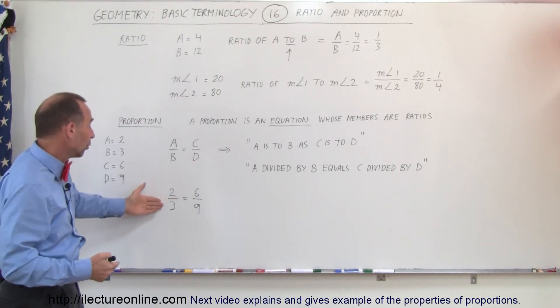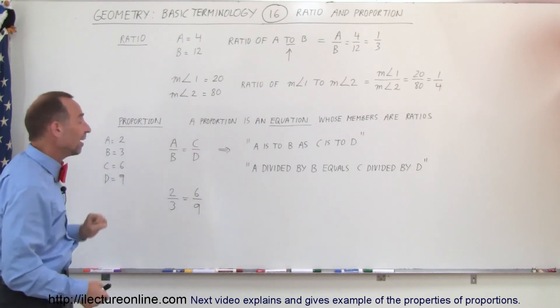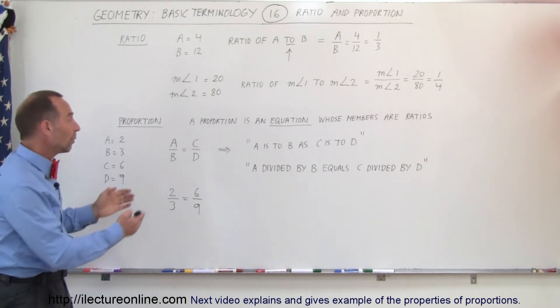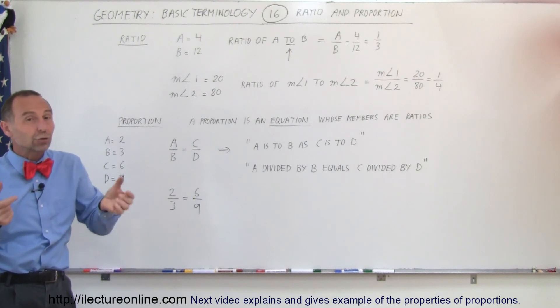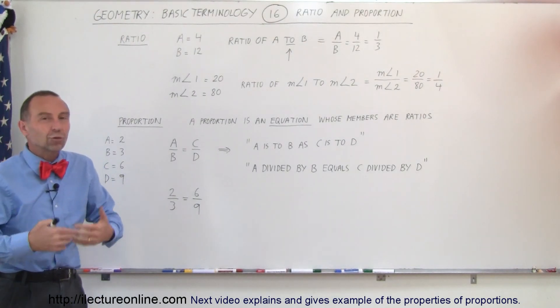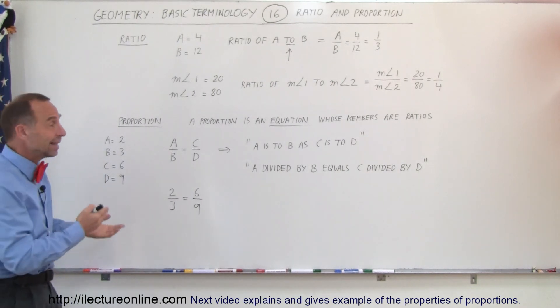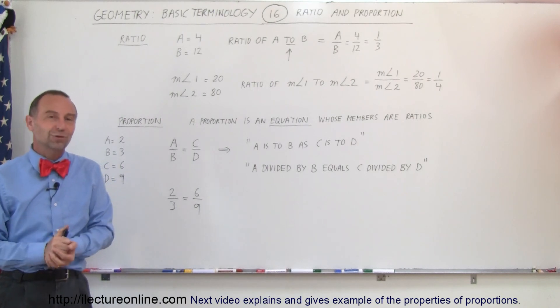So we can therefore write that 2 thirds equals 6 ninths when we replace A, B, and C, D with the values that they're equal to. So this is what we call a proportion. It's basically setting two fractions equal to each other, and a fraction can be thought of as a ratio, one number compared to another number. And that's how we talk about ratios and proportions.